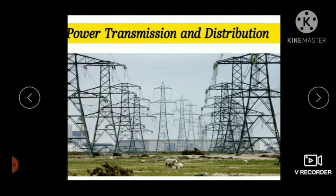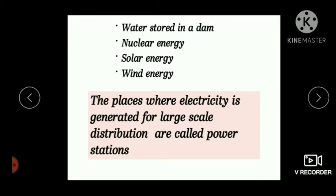From where does a generator get mechanical energy? They use mechanical energy from sources such as water stored in a dam, nuclear energy, solar energy, and wind energy. From these sources they get mechanical energy for the production of electricity.